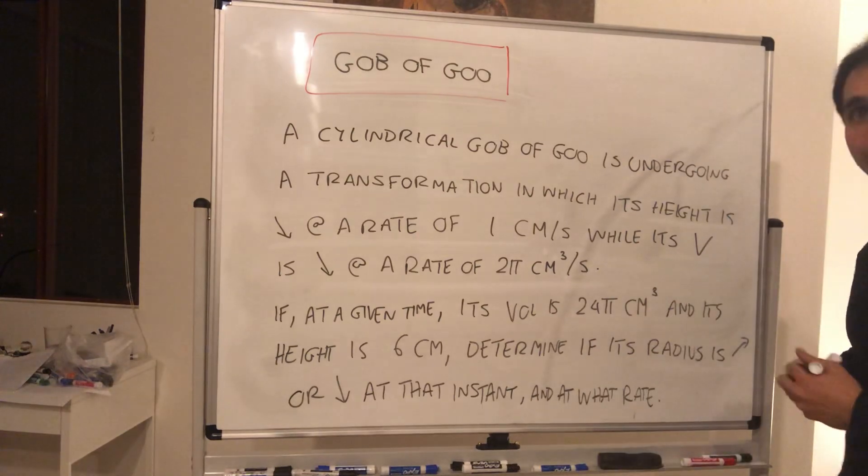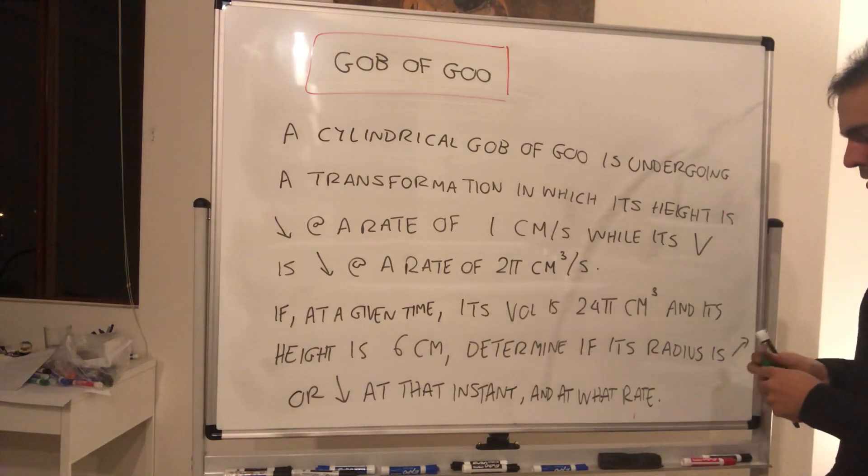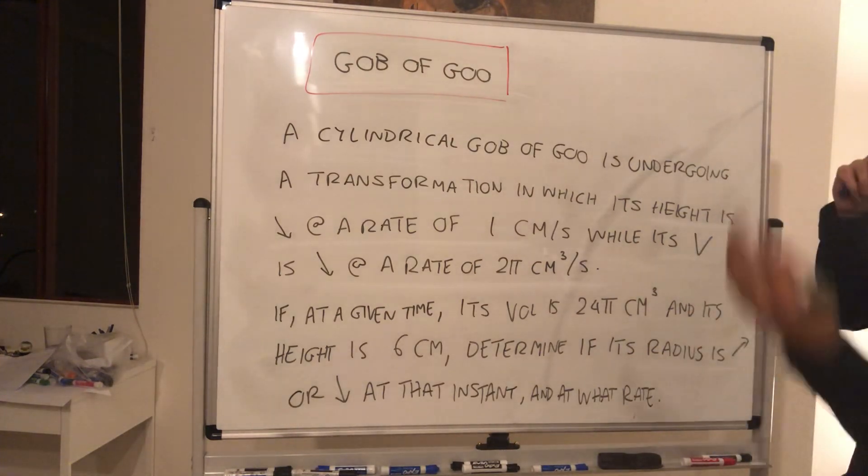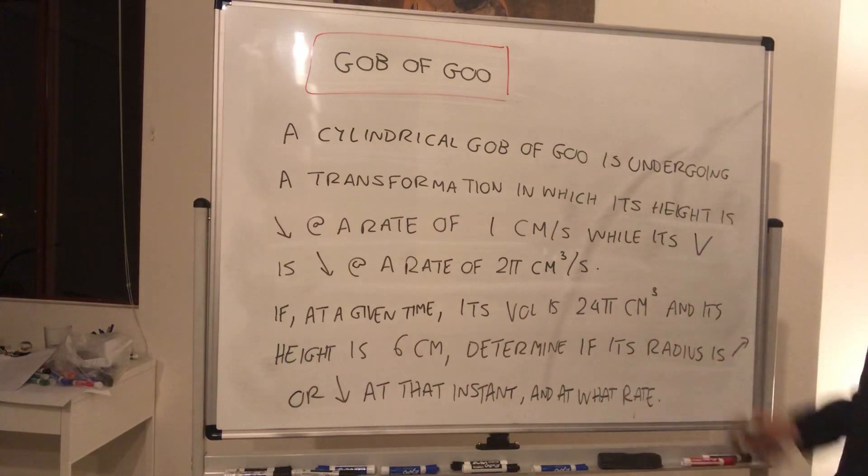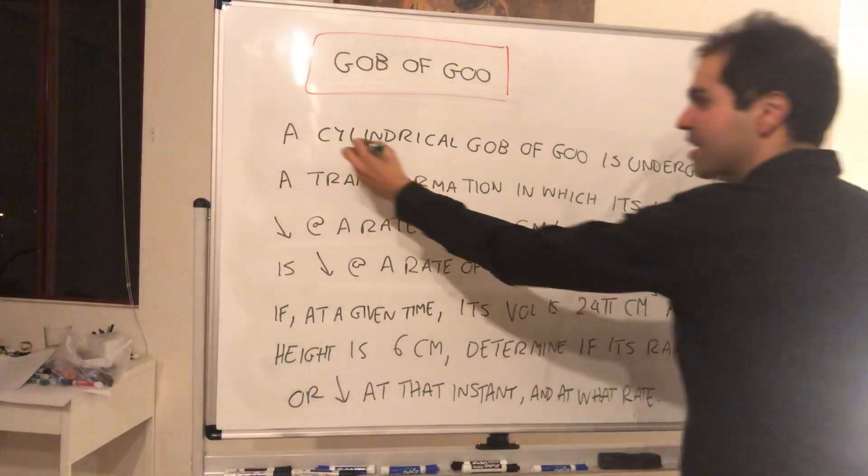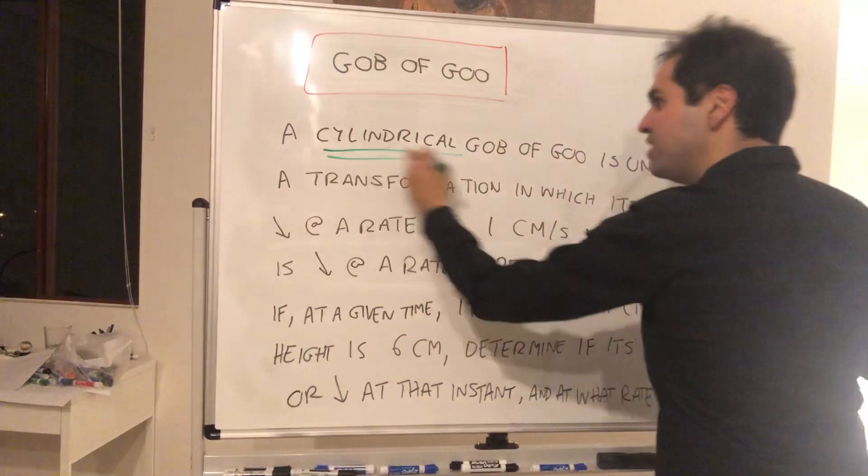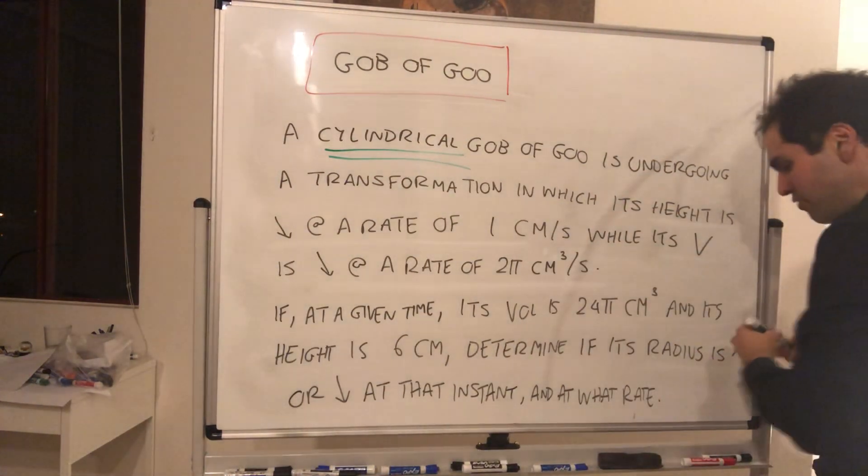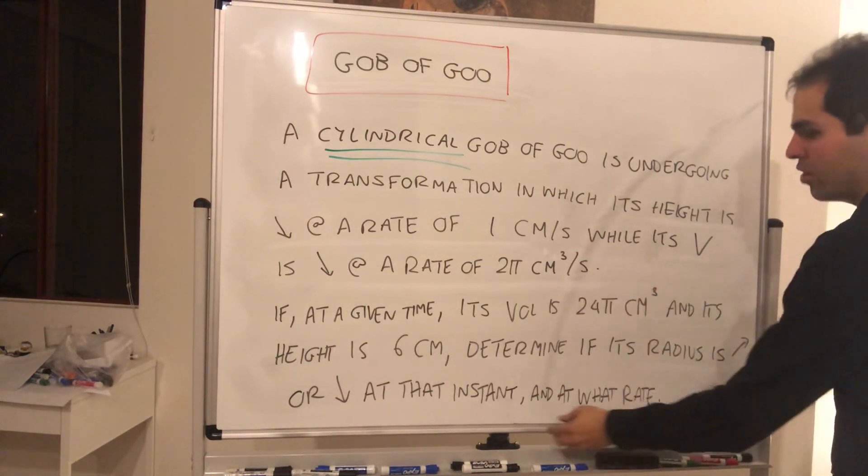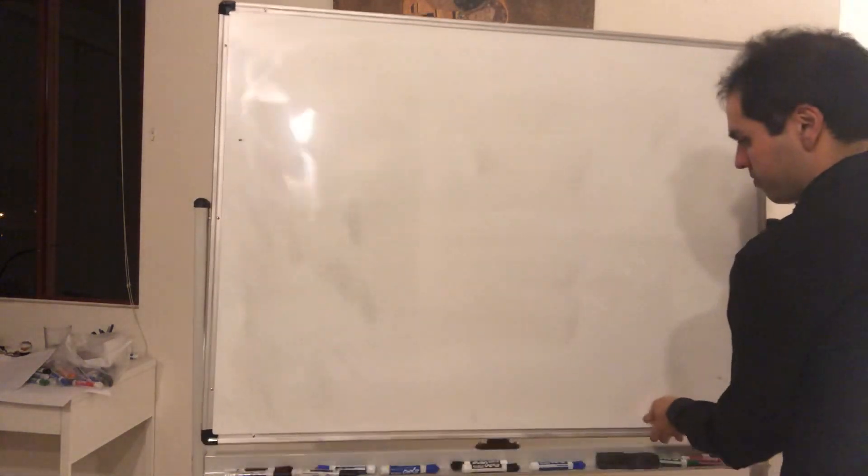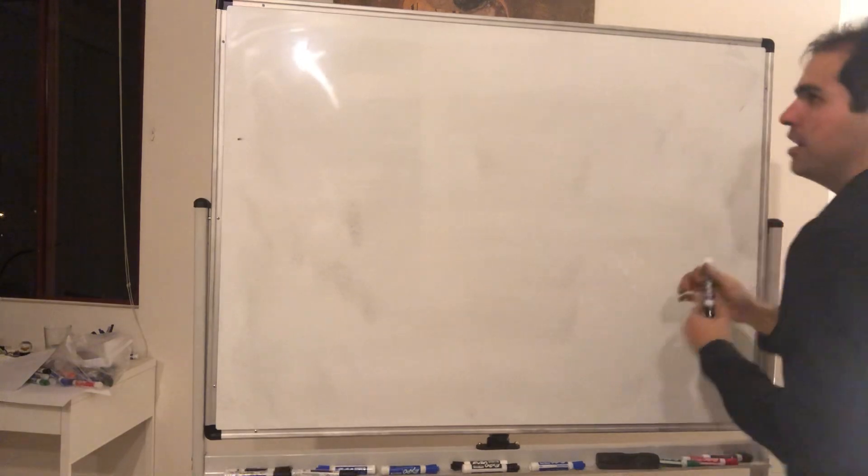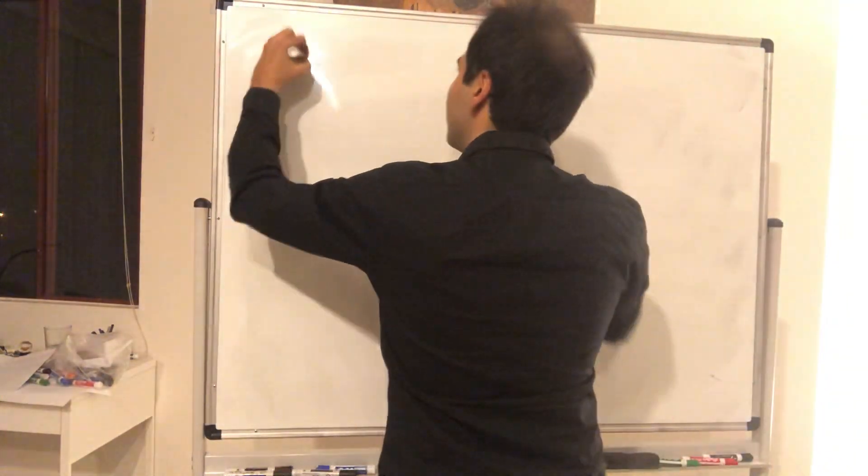Again, a lot of info thrown at you, but what helps us is again drawing a picture. So what does the gob of goo look like? The important feature is that it's always a cylinder, even though it might change radius or height, it's always cylindrical. So let's draw a little picture.